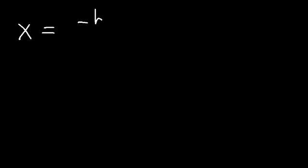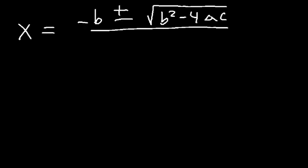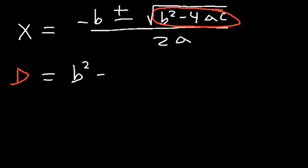In this video we're going to talk about how to calculate the discriminant of a quadratic equation. The quadratic formula is negative b plus or minus square root of b squared minus 4ac, divided by 2a. The interior of the square root is known as the discriminant, which is equal to b squared minus 4ac.